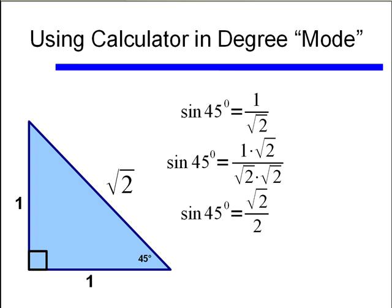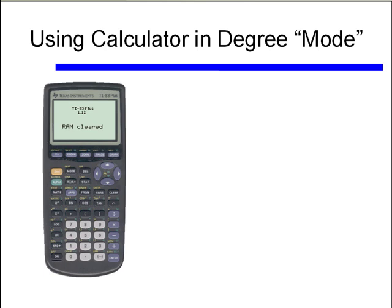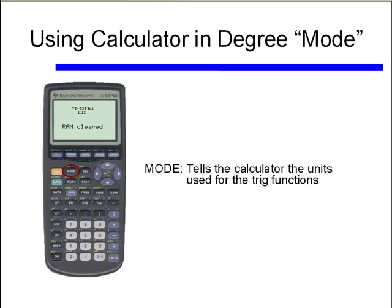Let's see how we'd use our calculator to come up with the same answer. The first button we really need to pay attention to is MODE. The MODE button tells the calculator the units you're going to use for the trig functions. Units are critical — for instance, if I asked how long it takes you to run 2, you don't know if I mean 2 miles or 2 meters, and your answer would be very different depending on the units.